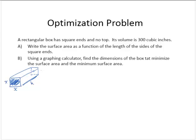Write its surface area as a function of the length of the sides. Well, its surface area would be the one end, x squared, and then we have the four sides, so we have 4xh. Now we want to write this as a function of the length of the side of the square ends. We need the surface area as a function of x.